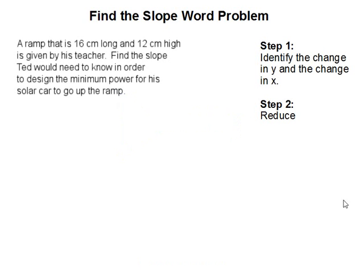Find the slope word problem. A ramp that is 16 cm long and 12 cm high is given by his teacher. Find the slope Ted would need to know in order to design the minimum power for his solar car to go up the ramp.